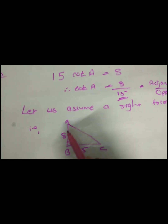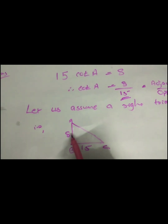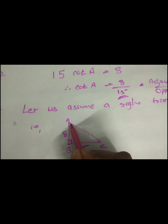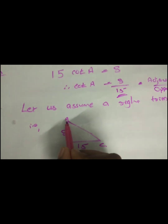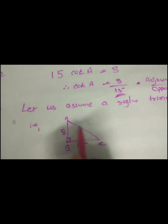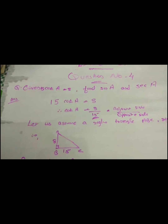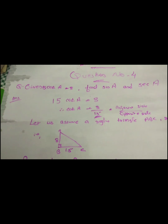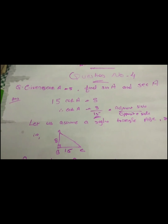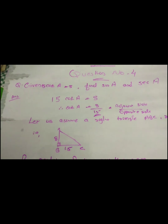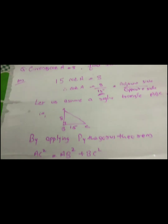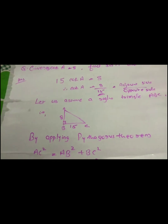The adjacent side of angle A is AB, so AB is 8. The opposite side is BC, so BC is 15. Now we have the right triangle. We apply the Pythagorean theorem: AC squared is equal to the sum of the other two sides squared. That is, AC² = AB² + BC².